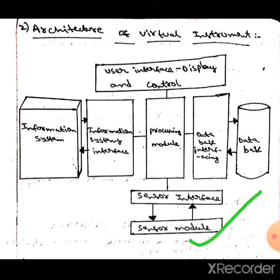The first one is the sensor module. The sensor module detects a physical signal and transforms it into a digital form. The next one is the sensor interface. The sensor interface may be a wired interface or a wireless interface.